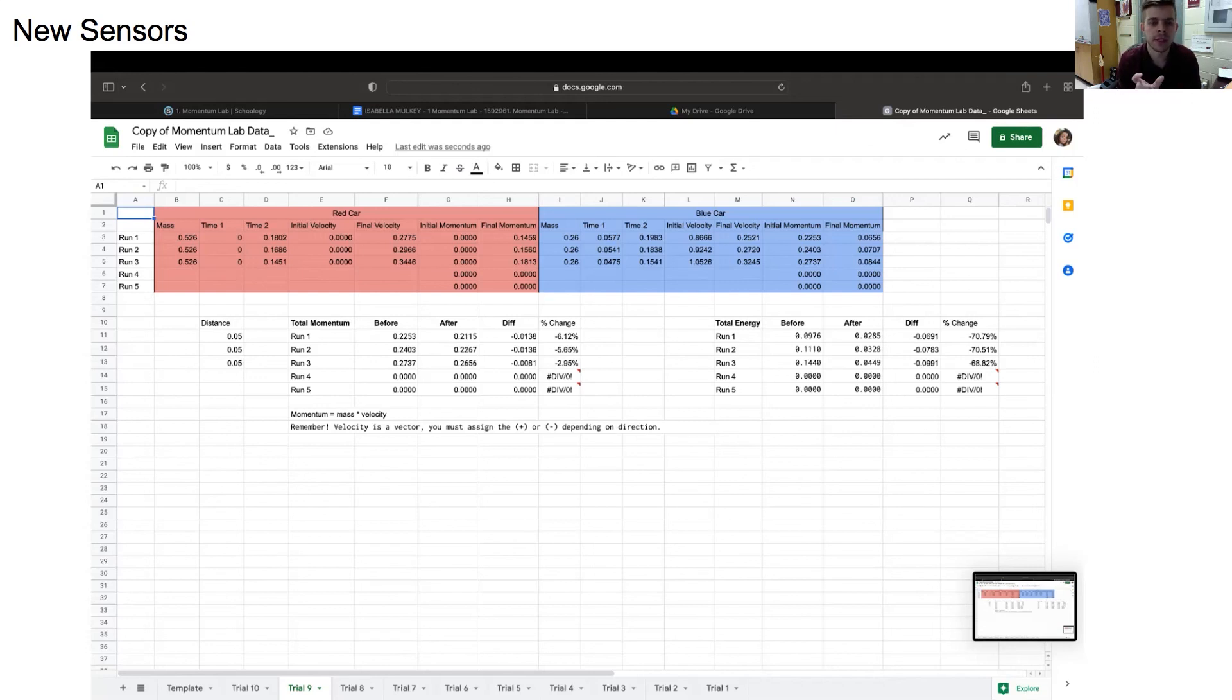The data showed the relationship that I wanted it to much better because there was less error associated with it. So I'm excited to continue. Next year, I plan on buying one or two more. And that way, every group can use these new sensors. And I'm really excited about the findings that I had for my grant.